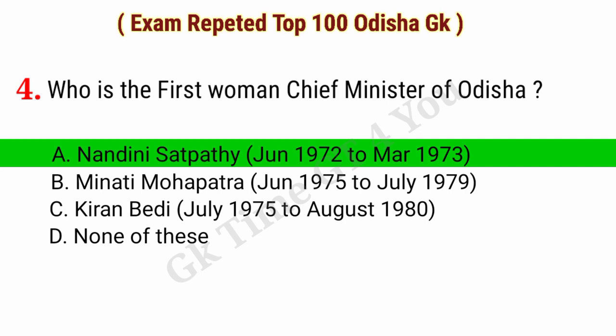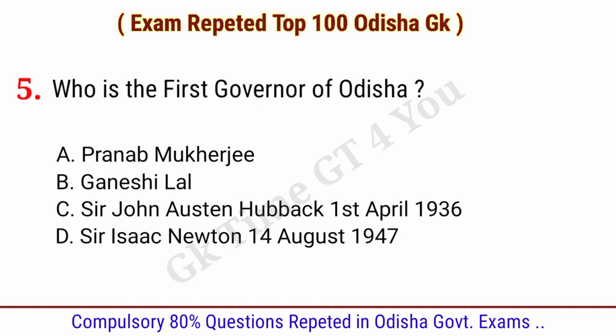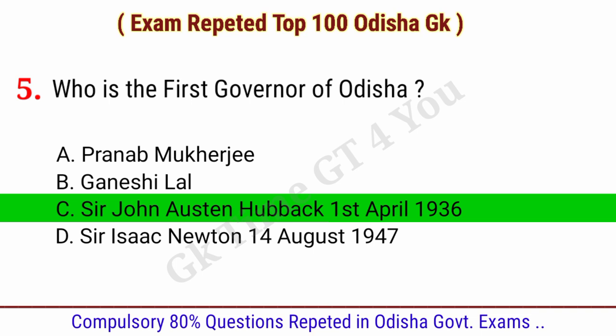Question number five: Who is the first governor of Odisha? Right answer, option C: Sir John Austin Havak, on 1st April 1936.